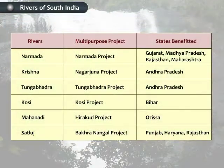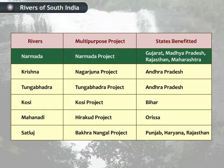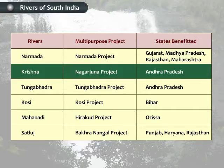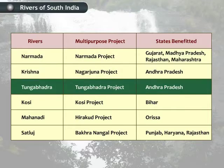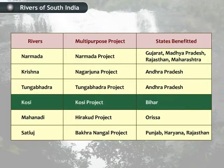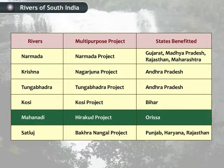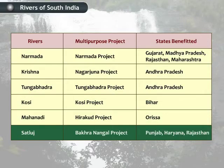A number of multi-purpose projects have been set up on rivers. These include the Narmada, Krishna, Tungabhadra, Kosi, Mahanadi and Satluj.